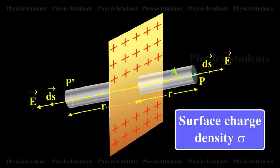By symmetry, the electric field is at right angles to the end caps and away from the plane. Its magnitude is the same at P and at the other cap at P prime.